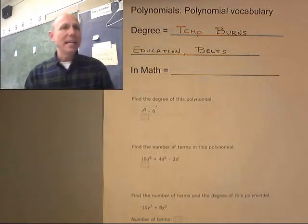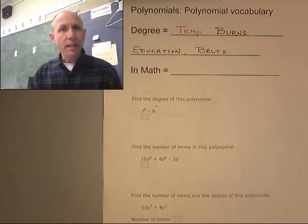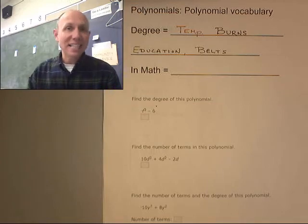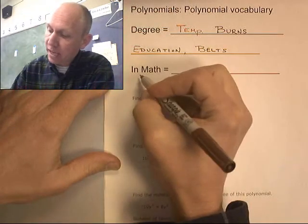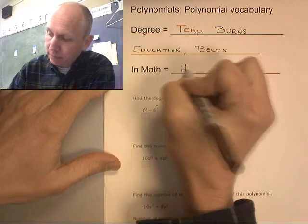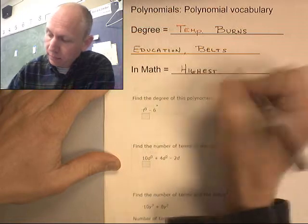Now in math, we're going to be talking about monomials and polynomials. The degree tells us who has the highest exponent. So in math, it's based off of the highest exponent. In math, it equals the highest exponent.